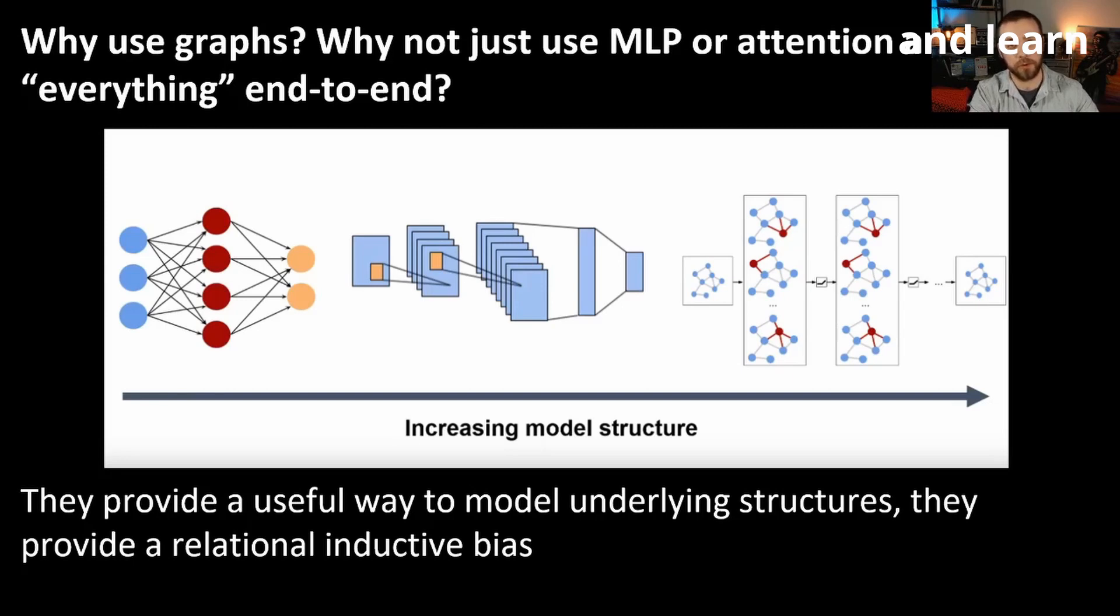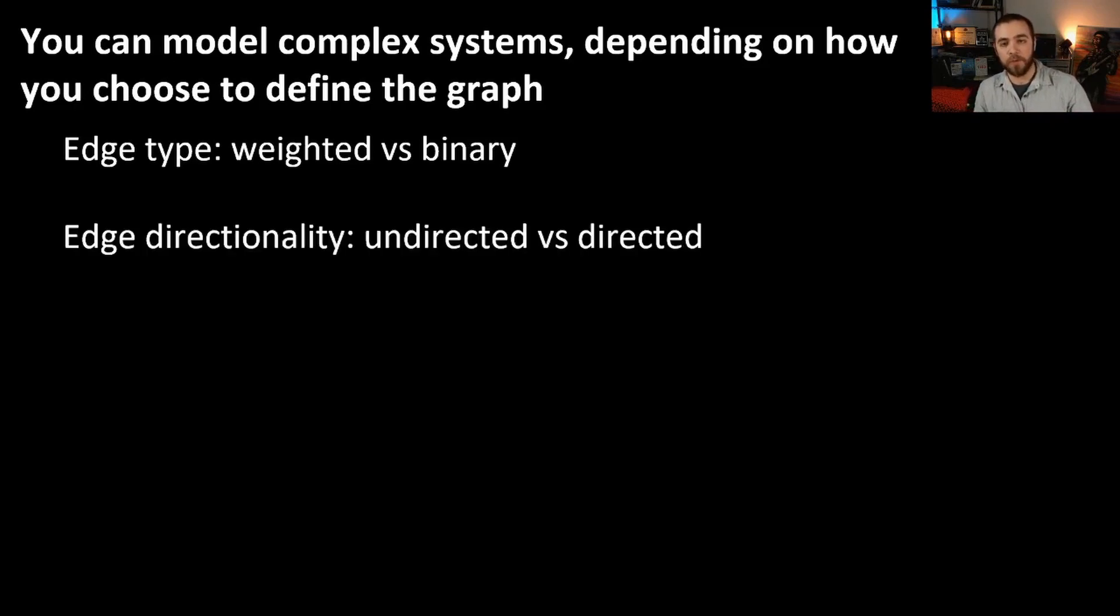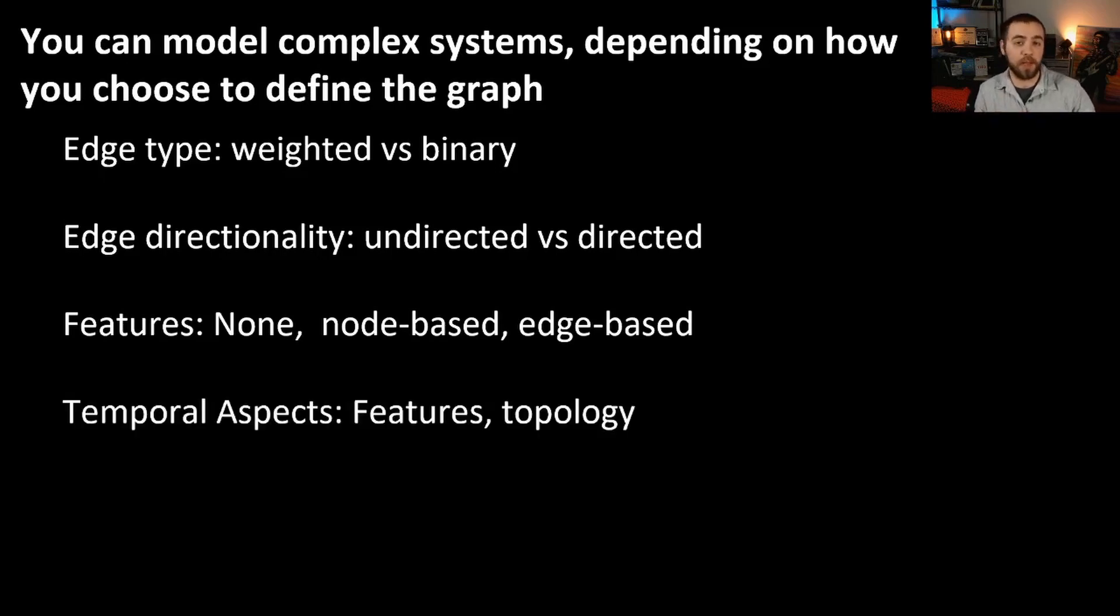And they can be very useful for data efficiency purposes. Now, in this talk so far, we have talked about very basic graphs with vertices and edges, and there's no real complexity yet. You can increase the complexity quite a bit on graph models. So you can change the edge type. You could have a weighted edge or a binary edge. You could have edge directionality, where you might have asymmetric interactions between entities. You could have features on your nodes. You could have features on your edges, or you could have no features at all. You could also include temporal aspects, so if your features change over time, or if your topology changes over time.